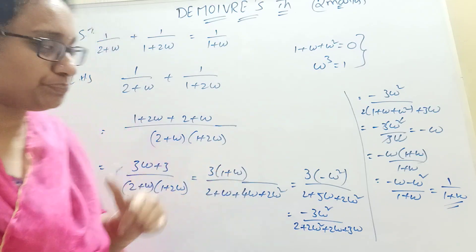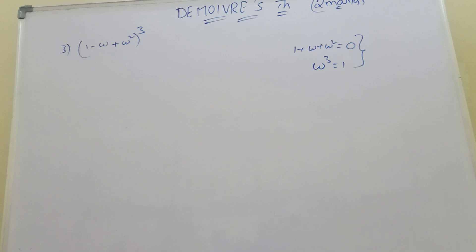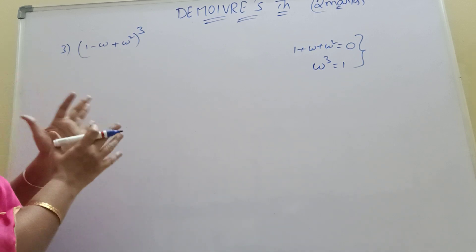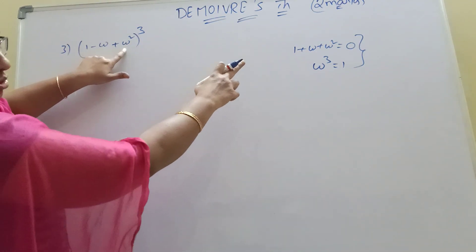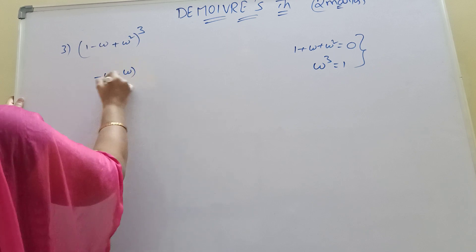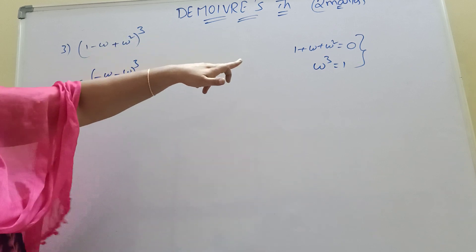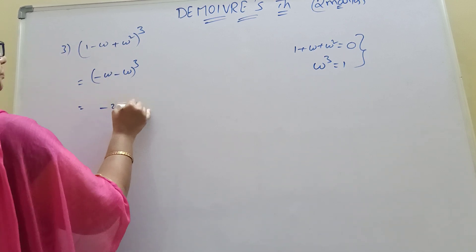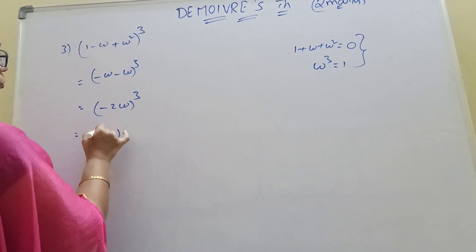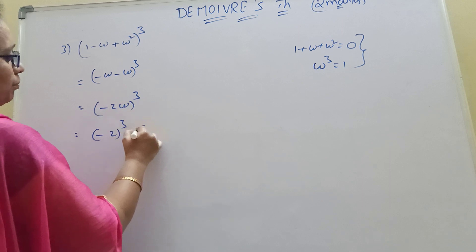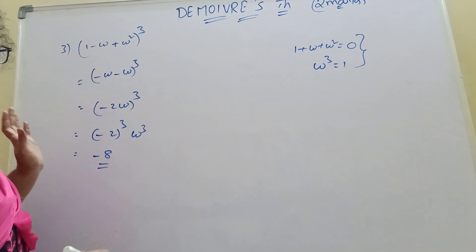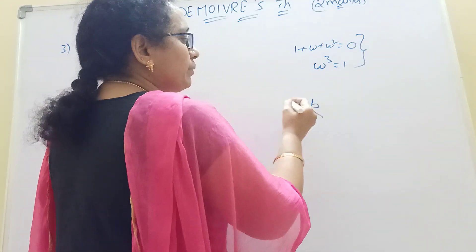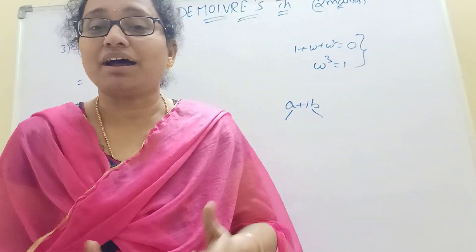This is a 2-marks problem — you can solve the left side. The question involves omega and omega squared: (1 + omega squared minus omega) whole cube. Here, 1 + omega squared equals minus omega, so it becomes (minus omega minus omega) cubed = (minus 2 omega) cubed = minus 8 times omega cubed = minus 8 times 1 = minus 8. Thank you very much.